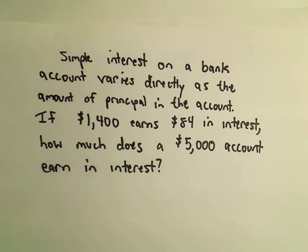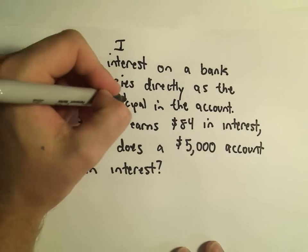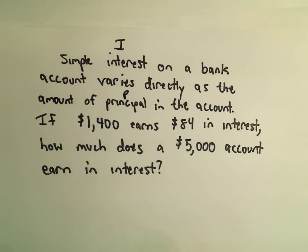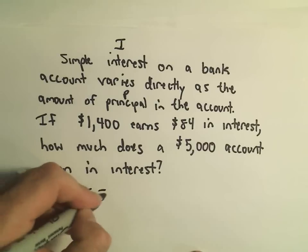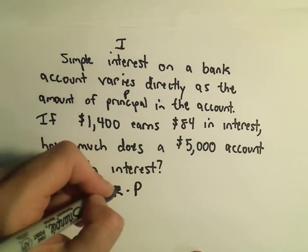So in this problem, the way simple interest works on a bank account is it varies directly as the amount of principal in the account. So I'm going to use I for the interest and maybe P for the principal. So we can write that statement as I equals K times P.